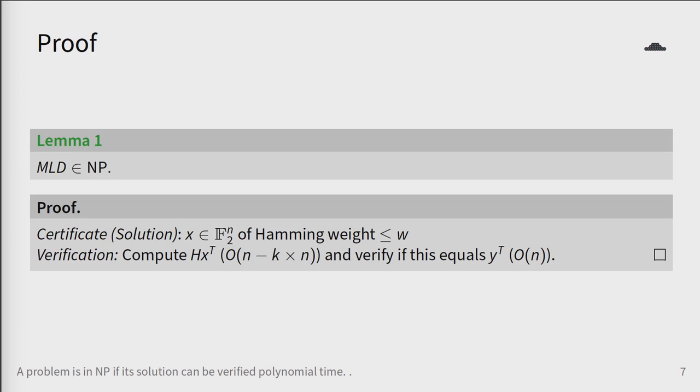The first step in proving that a problem is NP-complete is proving that it belongs to the set NP. Recall that a problem is in NP if we can verify its solution in polynomial time. For MLD, a solution is either a yes or a no. And in order to verify this, we need a certificate that claims to be a solution to the problem.